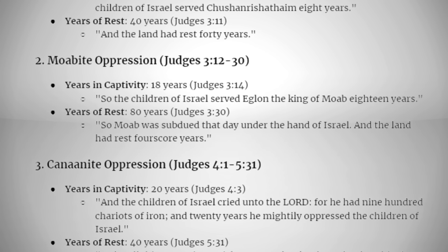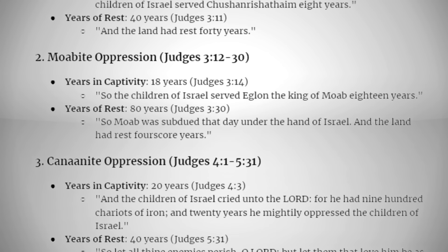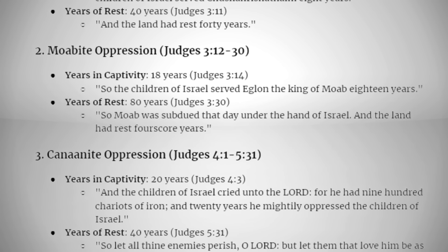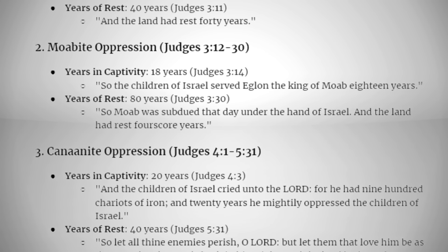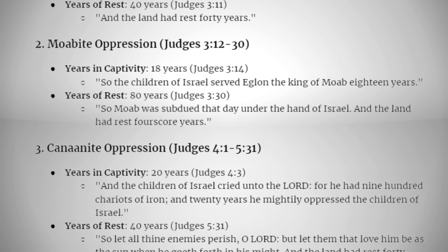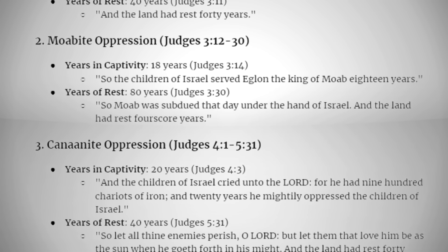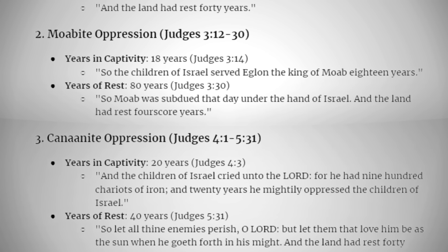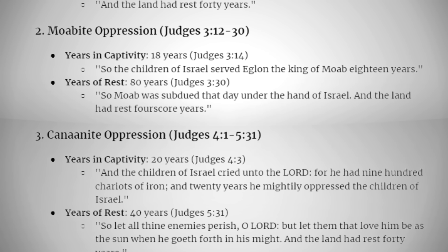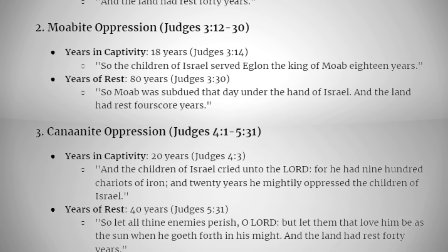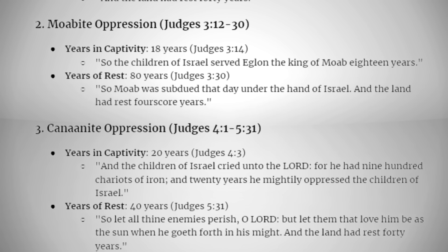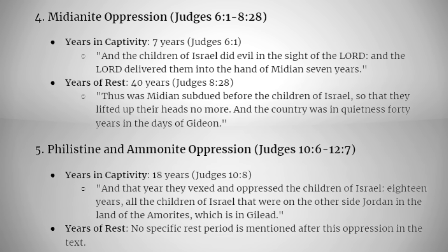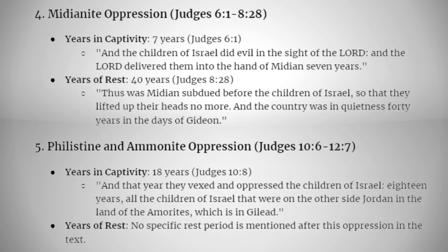Canaanite oppression (Judges 4:1–5:31): years in captivity — 20 years. Judges 4:3: "And the children of Israel cried unto the LORD, for he had 900 chariots of iron, and 20 years he mightily oppressed the children of Israel." Years of rest — 40 years. Judges 5:31: "So let all thine enemies perish, O LORD, but let them that love him be as the sun when he goeth forth in his might. And the land had rest 40 years."